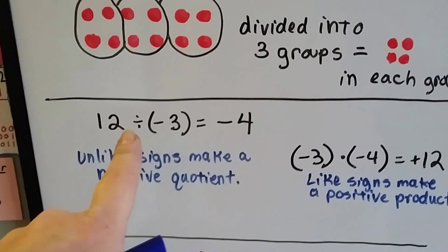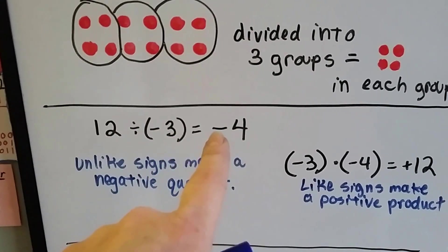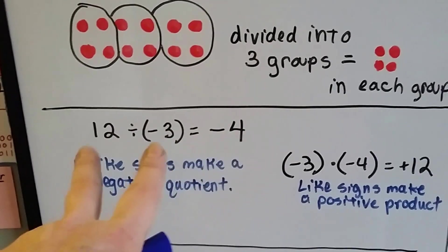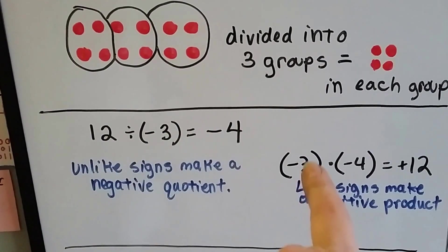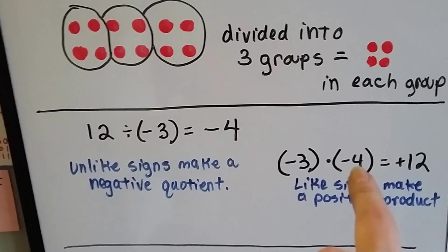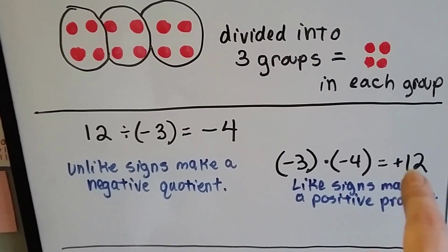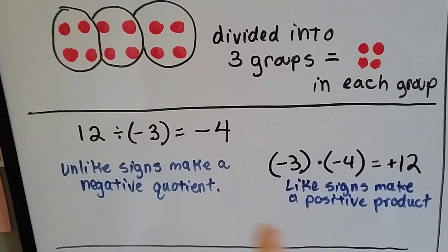If I have a positive 12 and I divide it by a negative 3, I'm going to have a negative 4 because these are unlike signs. If I had negative 3 times negative 4, I would have a positive 12.